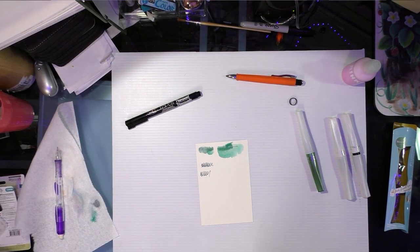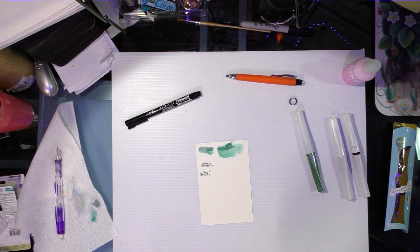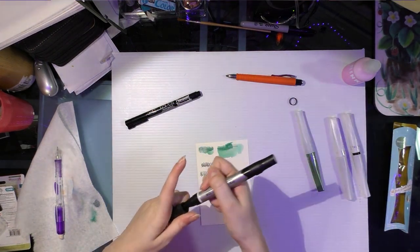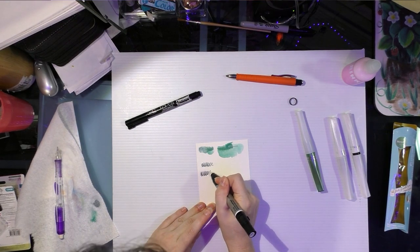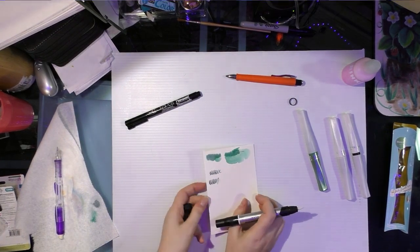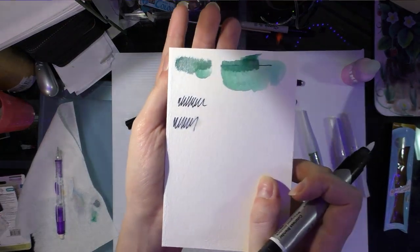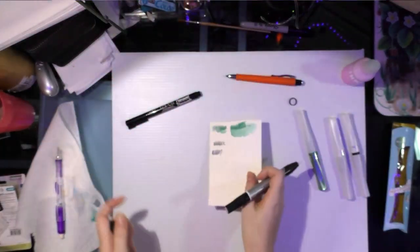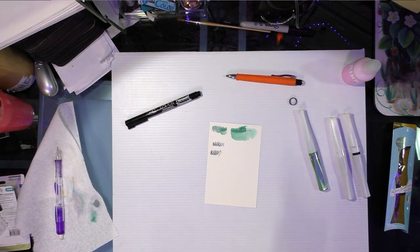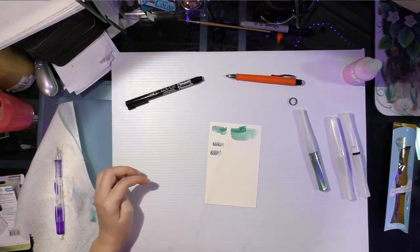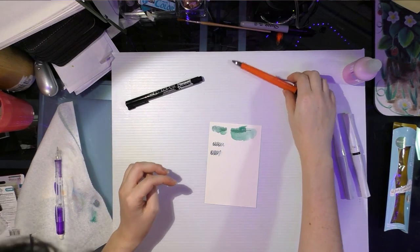They also included a Marvy Le Pen. We're gonna go over it with water first. It's waterproof. Now let's try an alcohol marker, this is a Prismacolor blender. As you can see, it's already reacting, so please don't use your Marvy Le Pen with your alcohol markers because you will be sad.